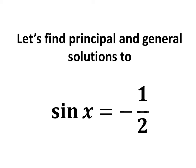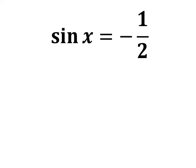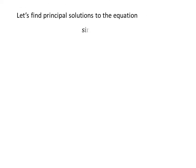In this video, we will learn to find the principal and general solutions to the equation sine of x is equal to minus half. Let us first find the principal solutions. We know the solutions to the trigonometric equation for which x is greater than or equal to zero and less than two times pi are the principal solutions.